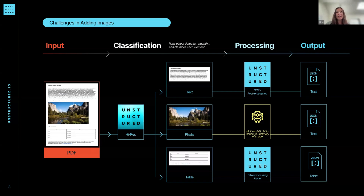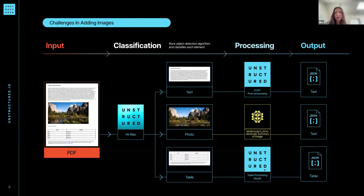The document is separated into a text section, a photo, and a table, with different processing pipelines for each. We have OCR for the text. In the platform, we have a multimodal LLM to generate a summary of the image, which outputs to text. In addition, in our metadata we store the base64 encoding of the image. For tables, we have a separate table processing model, and in the JSON output we have the table in both text and HTML format in the metadata.